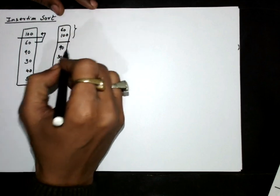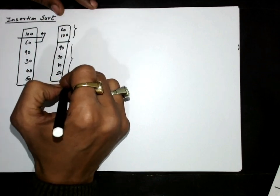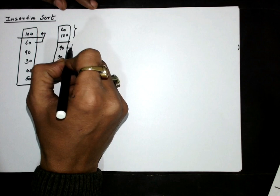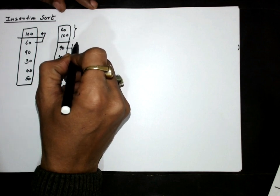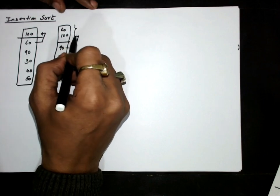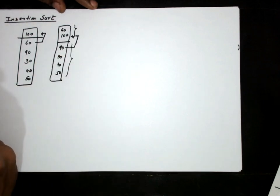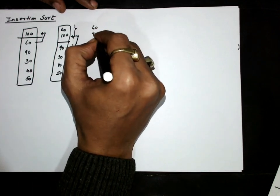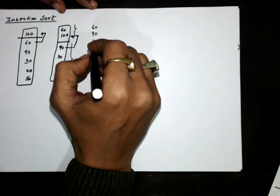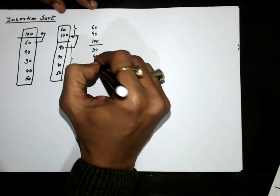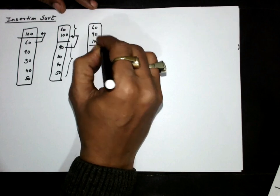This is the sorted part and this is the unsorted part. In the next iteration, we will again try to insert 90 into the sorted array. Where should the position of 90 be in the sorted array? Ahead of 100. So the position of 90 should be here. We are inserting 90 in the sorted part, and in the unsorted part, we remain with 30, 40, and 50.